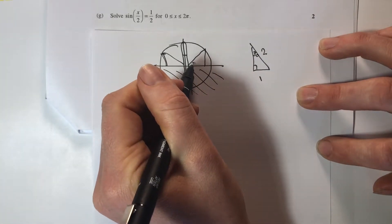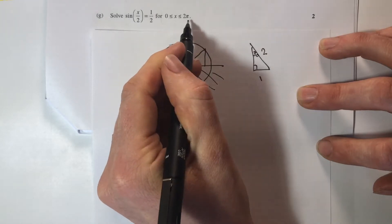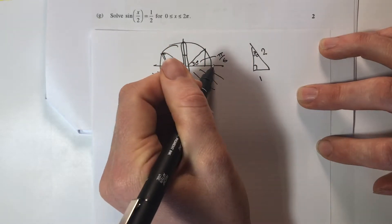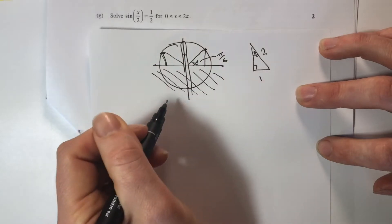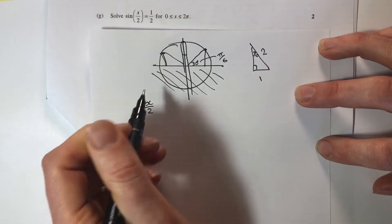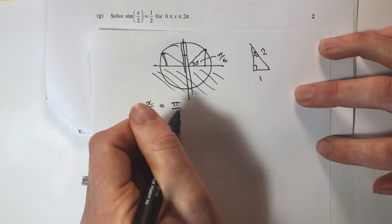So 30 degrees would be this one here except we're dealing with radians so that's actually π on 6. So my first quadrant answer would be π on 6. x on 2 equals π on 6.